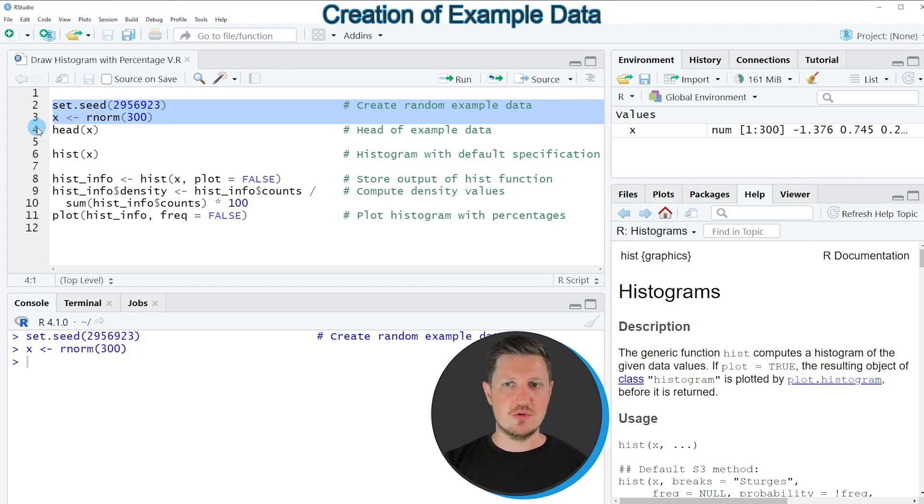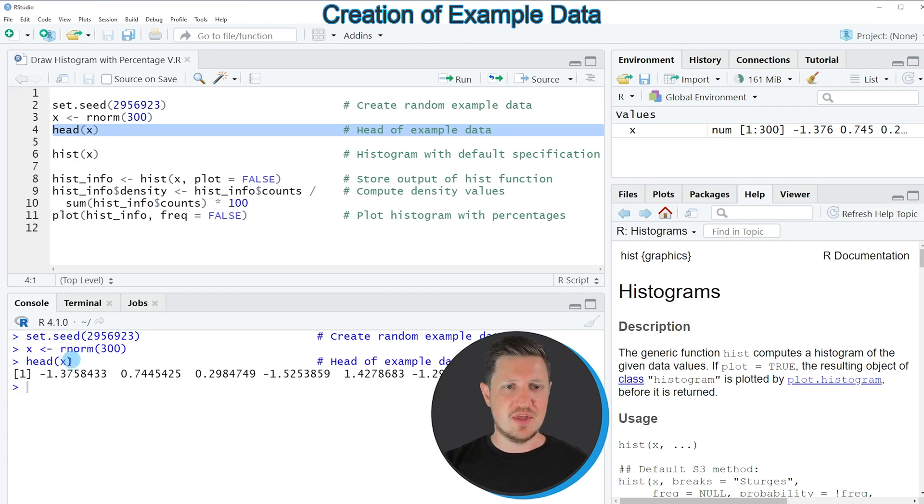So if you run these lines of code you can see at the top right of RStudio that a new vector object is appearing which is called X. We can have a look at the first six values of this vector object by running line 4 of the code, and then you can see at the bottom that we have created a vector object containing numerical values.